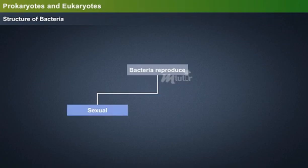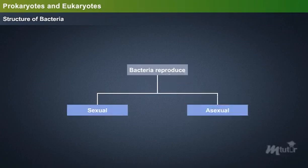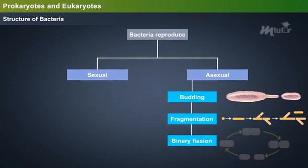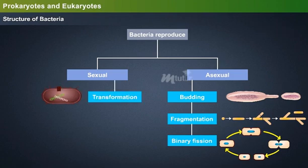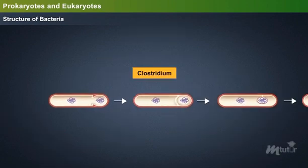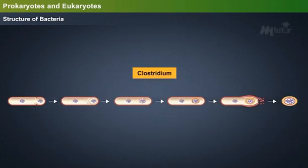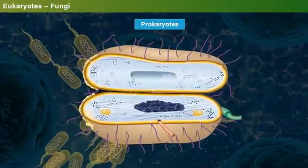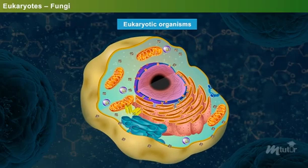Bacteria are reproduced by sexual and asexual methods. Asexual or vegetative reproduction includes budding, fragmentation and binary fission. Sexual reproduction takes place through transformation, transduction and conjugation methods. Certain species of bacteria like Clostridium regenerate through endospores.